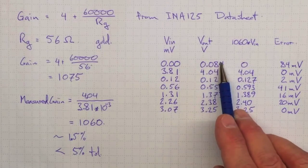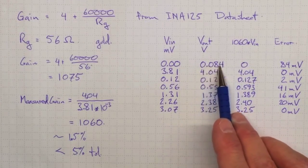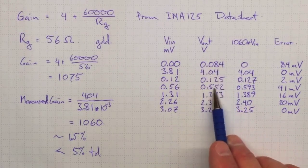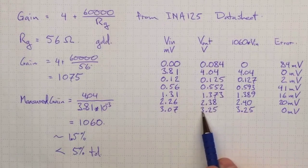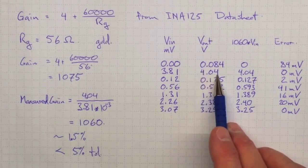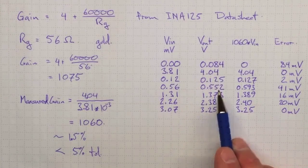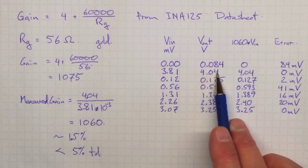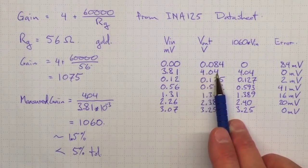Now, you'll notice that the measurements of Vout go from three decimal places on the small voltages down to just two decimal places on the larger voltages. That's because I had to switch up a range on the multimeter, which only shows two digits on the 0 to 20 volt scale.